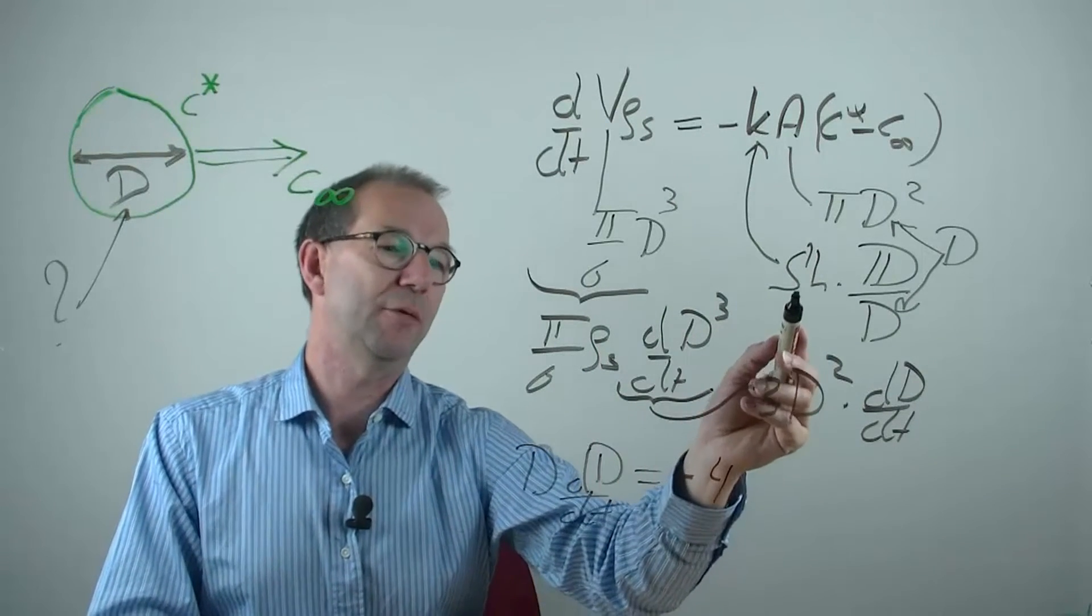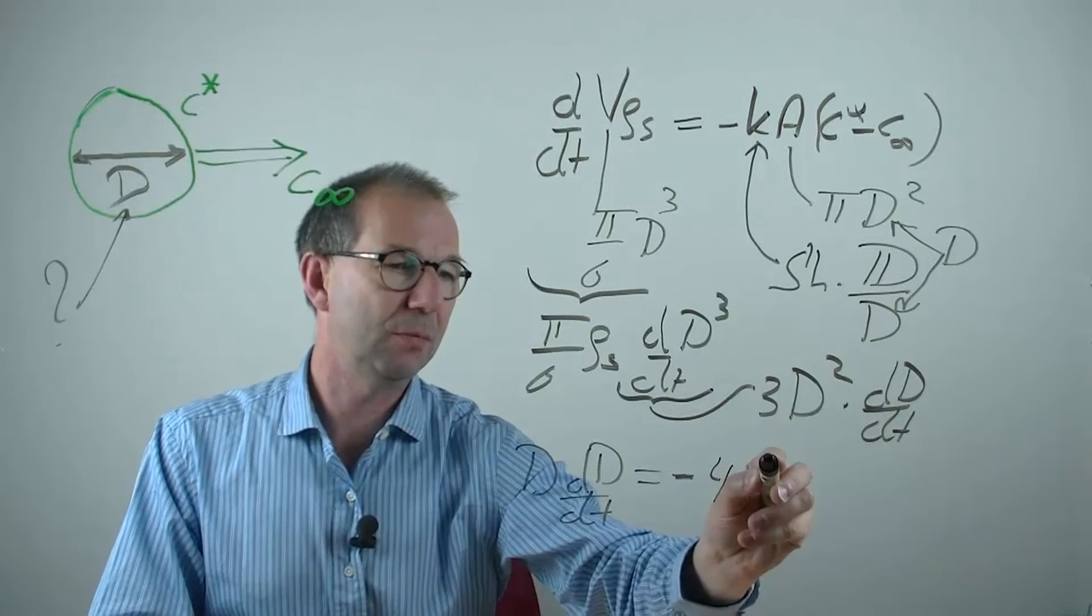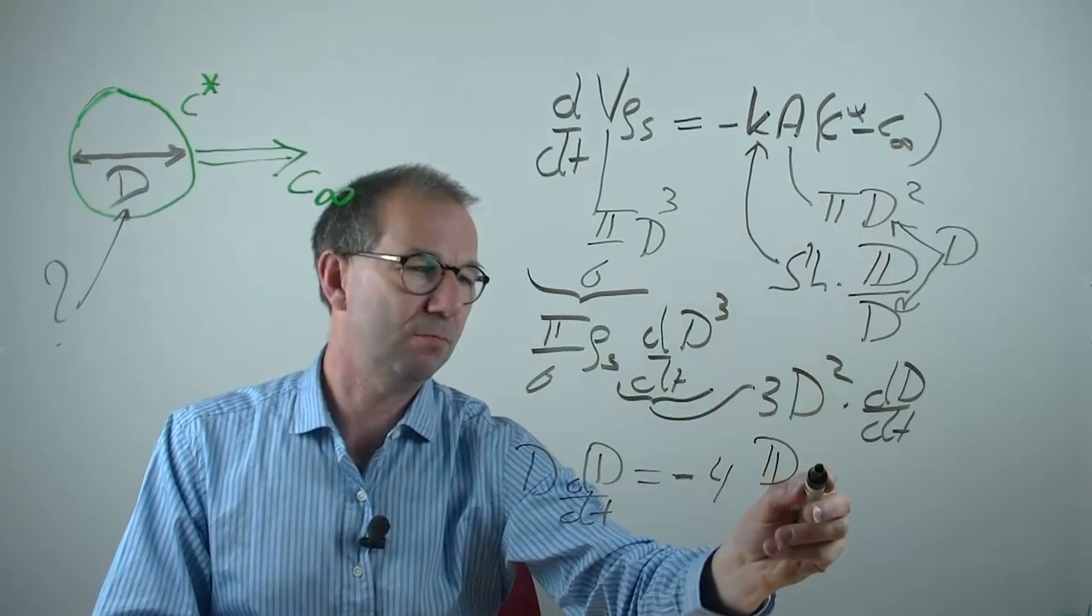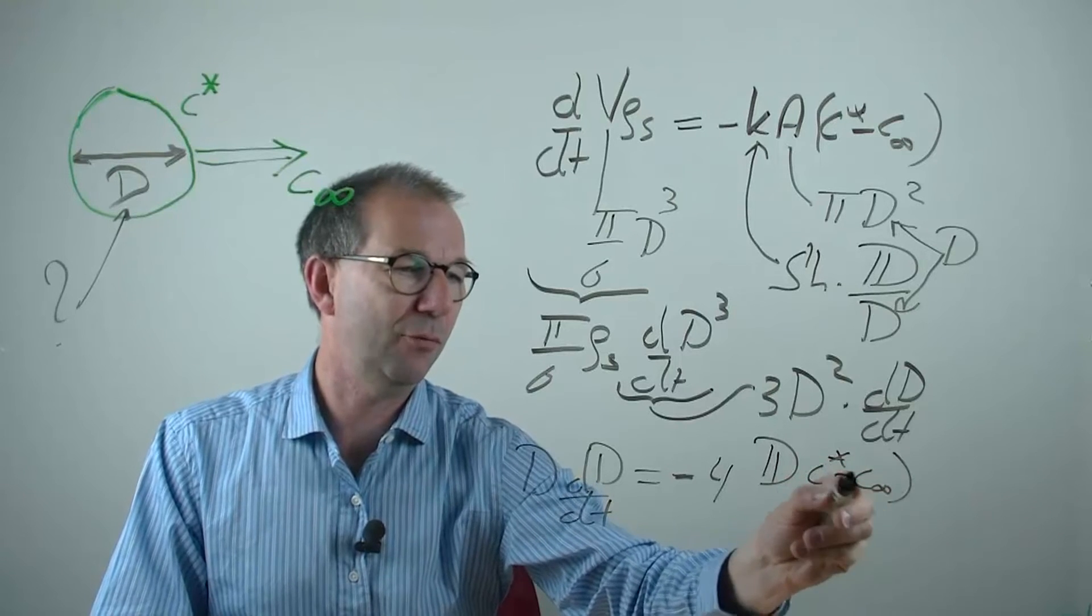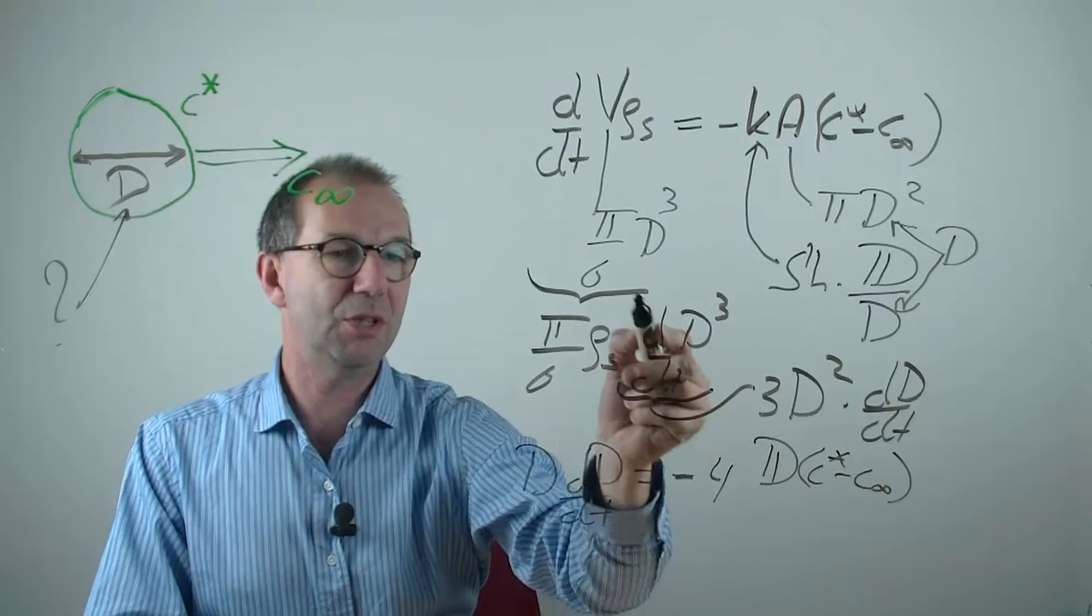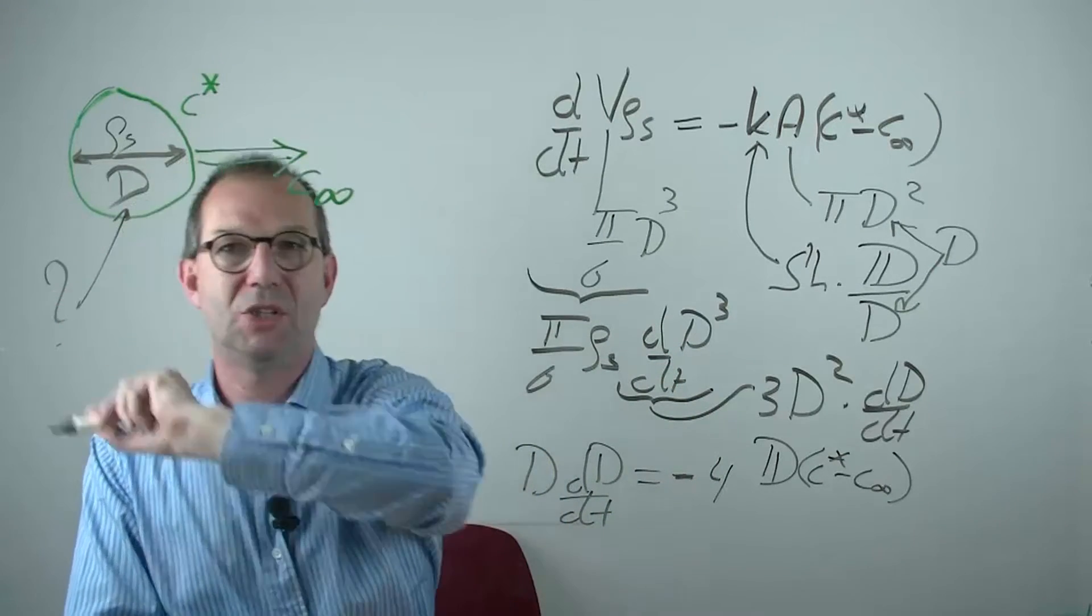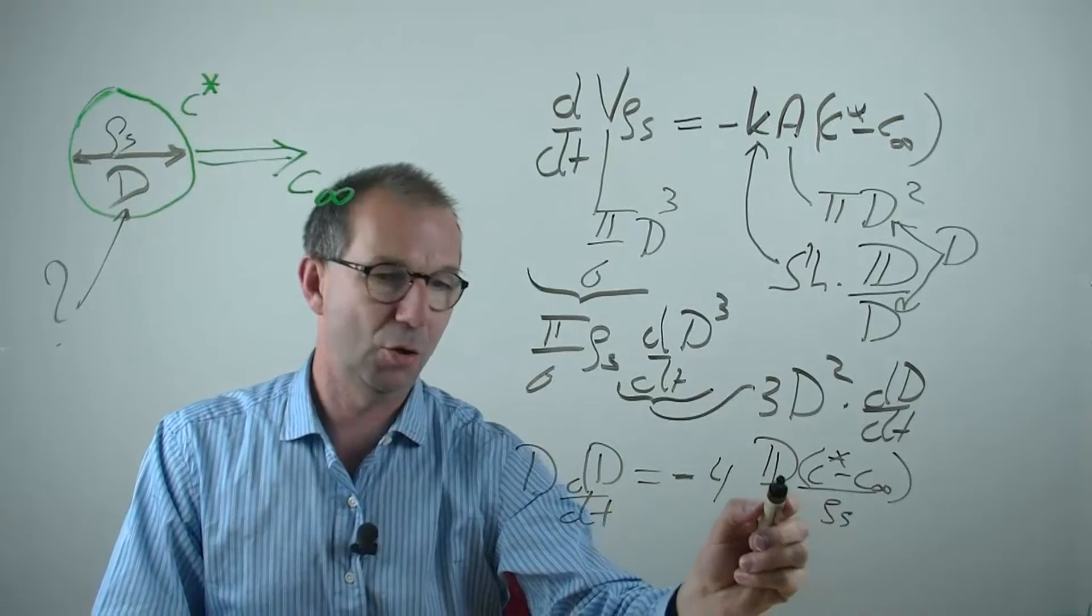What else is left? Sherwood itself is used. Diffusion coefficient is left. Driving force, C star minus C infinity is left. From this side, I get the density of the sphere, rho sub S, that goes under it.